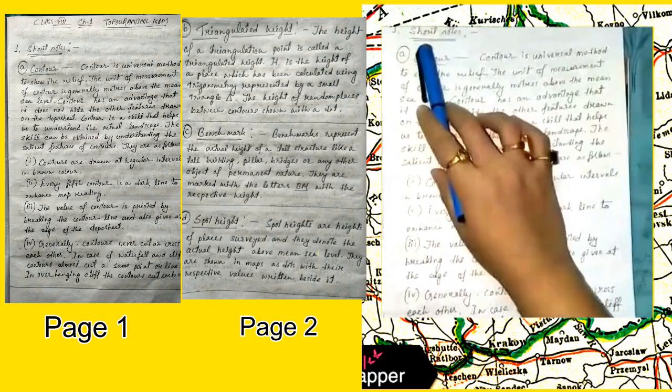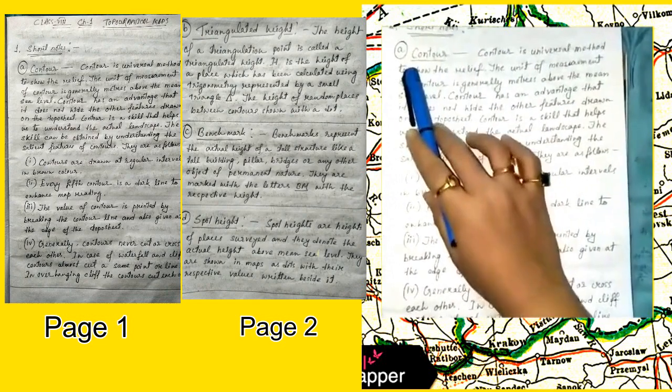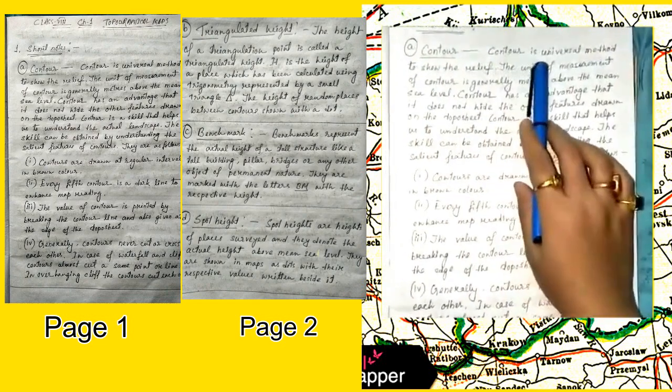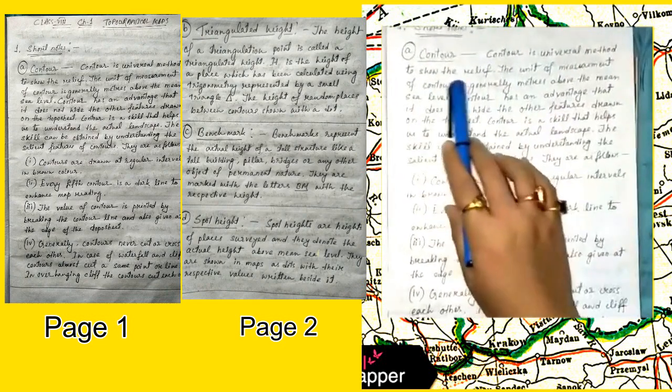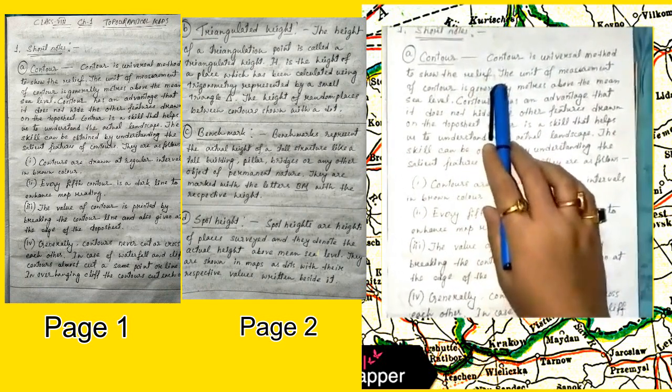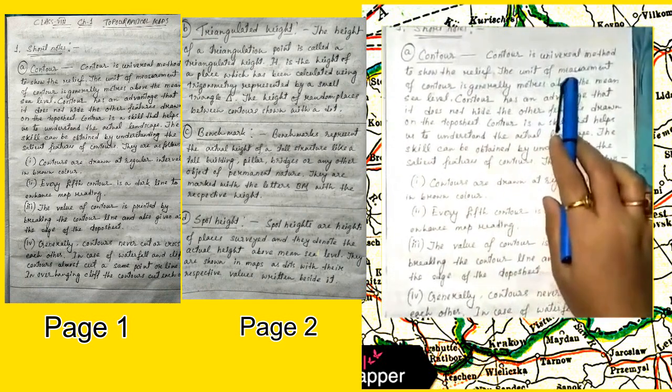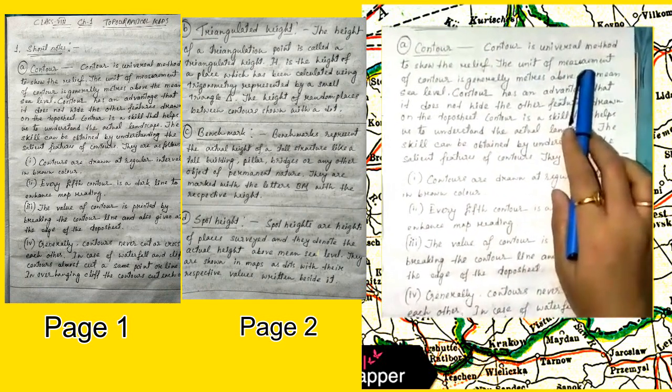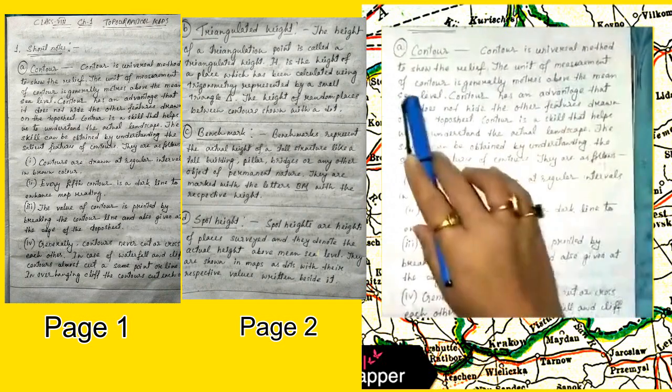First of all, short notes. Number A: Contour. Contour is a universal method to show the relief. The unit of measurement of contour is generally meters above the mean sea level.